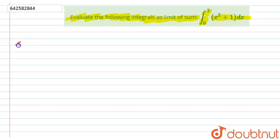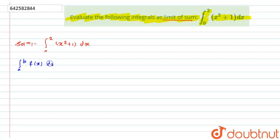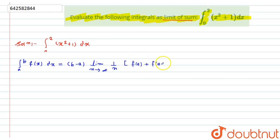So let's start with the solution. I will write the given question, that is the integral from 0 to 2 of (x squared plus 1), and we have to solve it by using limit of sum. As we know the formula: the integral from a to b of f(x) dx equals (b minus a) times the limit as n tends to infinity, times 1 upon n, in bracket f(a) plus f(a plus h) plus up to f(a plus (n minus 1)h).